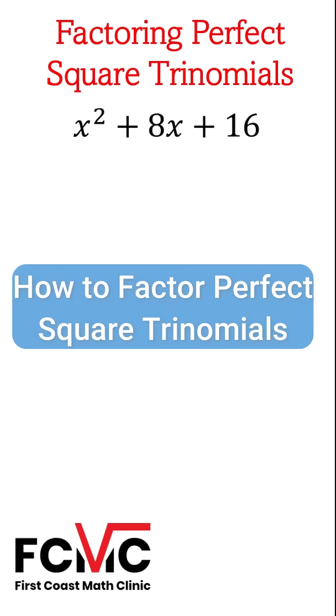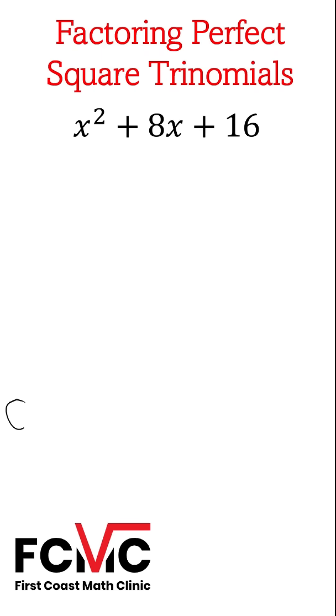How do we factor a perfect square trinomial? Well, we know our perfect square trinomial can be in the form a squared plus 2ab plus b squared, and we get that by squaring the binomial a plus b squared.